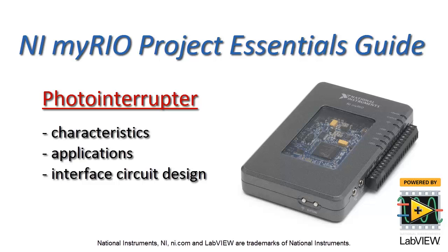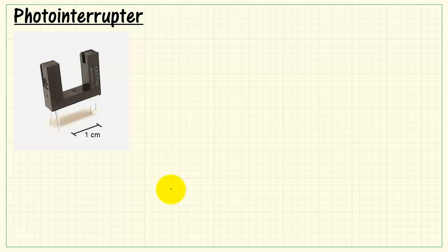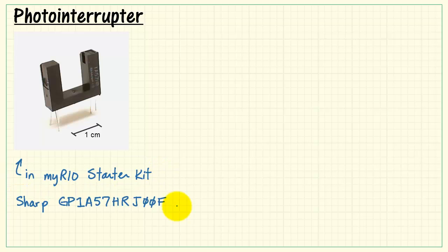Now let's take a look at the photo interrupter, especially its characteristics, applications, and we'll also consider an interface circuit. Here's the photo interrupter that's included in the MyRio Starter Kit. This is a device manufactured by Sharp.